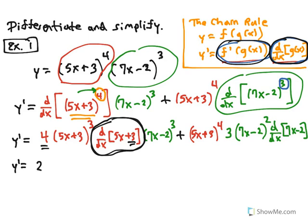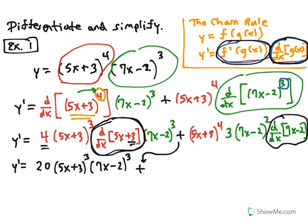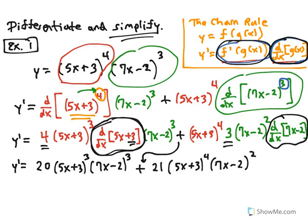So we write 20 times (5x + 3)^3 times (7x − 2)^3. Then the derivative of 7x is 7 and the derivative of the constant 2 is 0, giving 7 − 0 = 7. Then 7 times 3 is 21. So we have plus 21 times (5x + 3)^4 times (7x − 2)^2. The problem says differentiate and simplify, so we've done the differentiation — now we check for simplification.